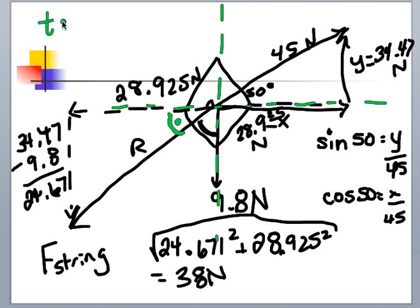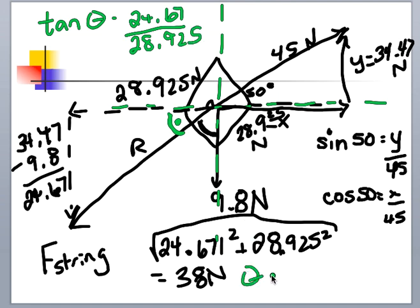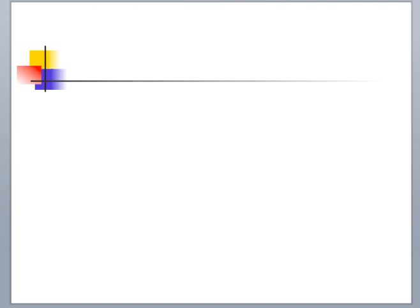Tangent of that angle is the opposite, 24.67, over 28.925. When I solve for that angle, I get the angle to be 40.46, which is 40 degrees below the horizontal. That is the final answer.